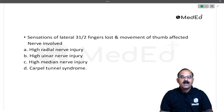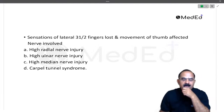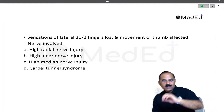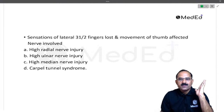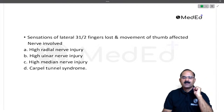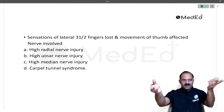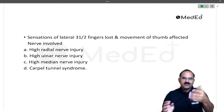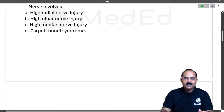So it is a high median nerve lesion. If sensations of the skin over the thenar eminence are gone, it is a high median nerve lesion. If sensations over the thenar eminence are intact, it is carpal tunnel syndrome. Ulnar nerve and radial nerve are out of the question.